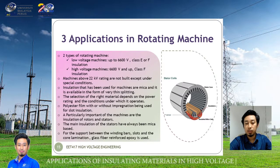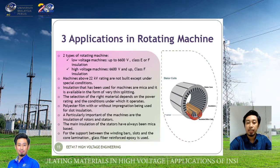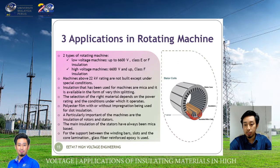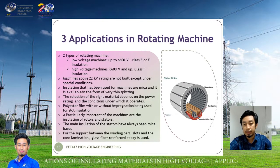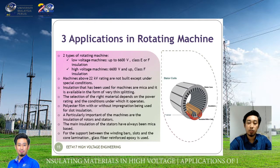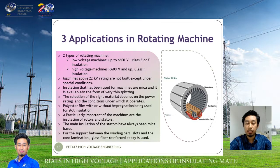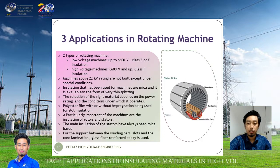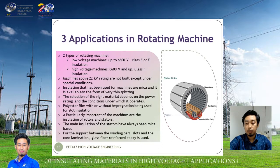For the rotating machine, we can see the right figure here — the cross-section of the rotating machine. They have a stator coil, a stator core, the insulator, the insulated wire coils, and temperature sensors. Normally, the insulator is placed at the stator part because the rotating machine has a rotor and a stator part.